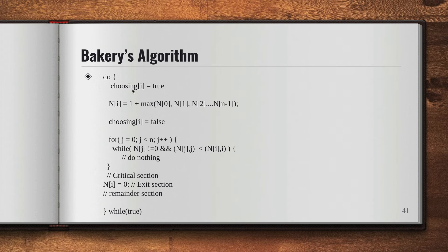What it's going to do is set the choosing[i] value equals to true. So by setting choosing[i] equals true, it lets the other processes know that it's choosing a token number. That's why it sets it to true.